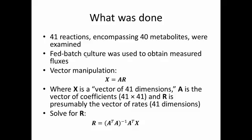So what was done? What did the authors do? They looked at 41 different reactions, and those reactions encompassed 40 metabolites. Fed batch culture was used to obtain the measured fluxes that they considered. And then they did vector manipulation, and this is pretty much straight out of their materials and methods of the paper, where they have this vector equation, where x equals ARx, they're calling a vector of 41 dimensions. They don't specify what it is more than that. One can assume it's a vector of unknowns, I guess, but probably not, considering the equation below. Bottom line is it's unknown to us. And A, we do know, is the vector of stoichiometric coefficients. And this is a matrix of 41 by 41. And R is presumably, though they don't say it, is the vector of rates. And that's 41 dimensions itself.